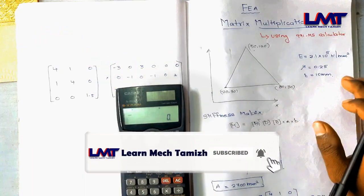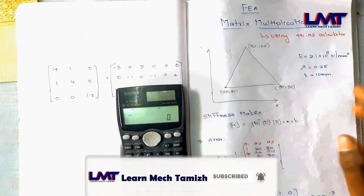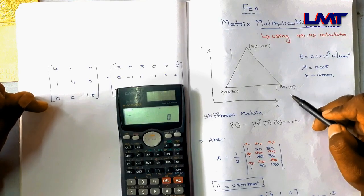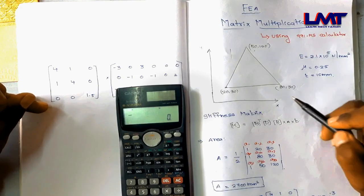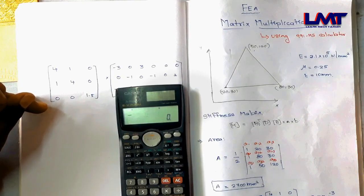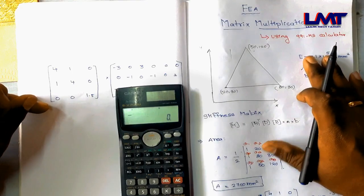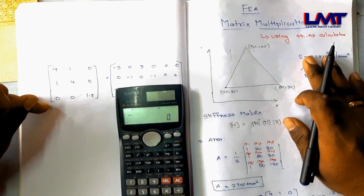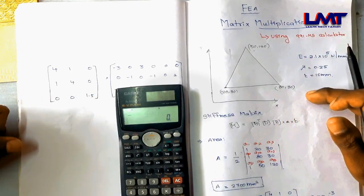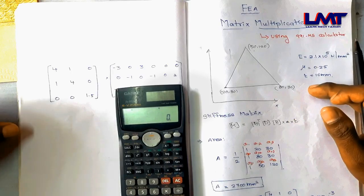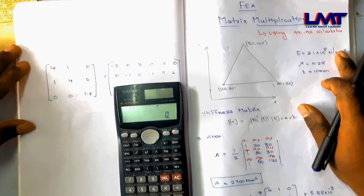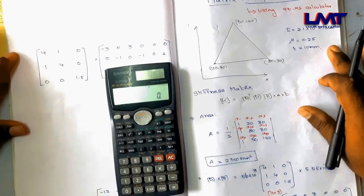We have a triangle element. For this element we have the E value (Young's modulus), mu value (Poisson's ratio), and t value (thickness). We can do this calculation using the calculator.